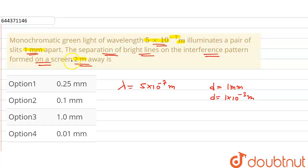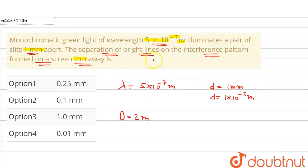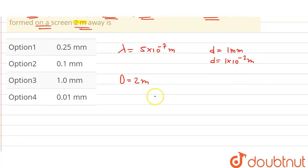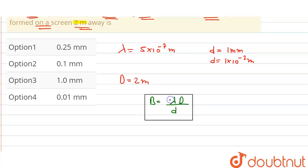The distance between the screen and slits, capital D, is 2 meters. We have to find the fringe width, B. The formula for fringe width is: B = lambda × D / d, where lambda is the wavelength, capital D is the distance between slit and screen, and small d is the separation between two slits.